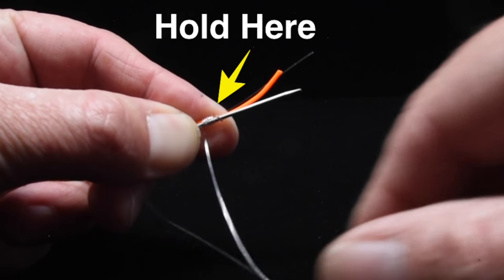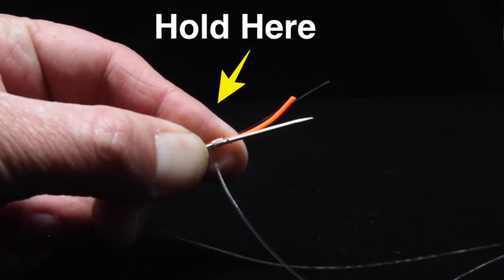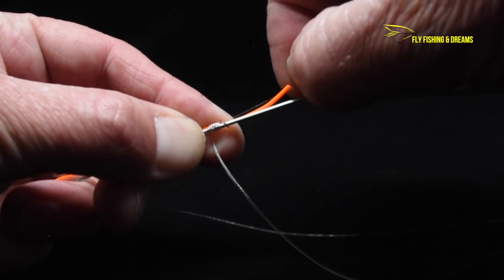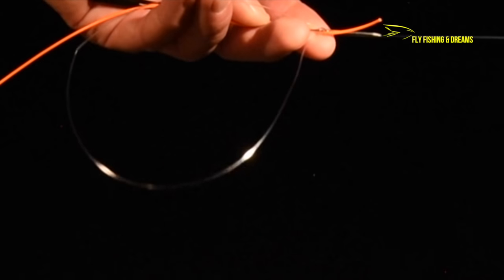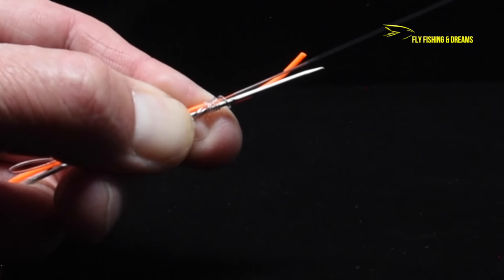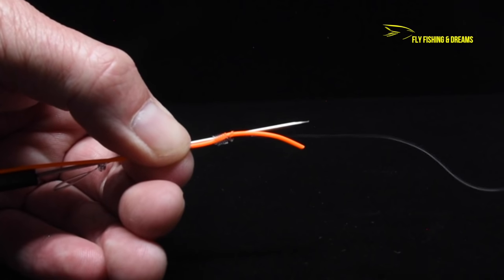hold the wraps in place with the index finger of your left hand. Grab the skinny end of the leader with your right hand and pull it to the right. The large loop that was formed earlier will tighten and you will now have a nail knot formed around the bodkin needle.